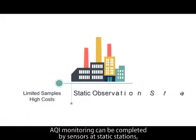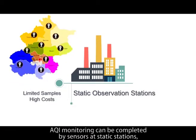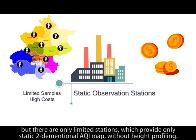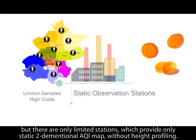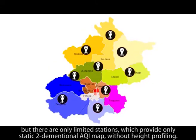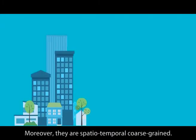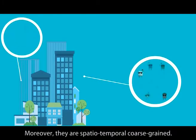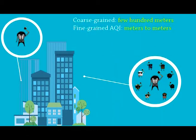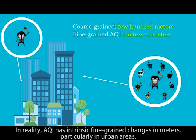AQI monitoring can be completed by sensors at static stations, but there are only limited stations which provide only a static two-dimensional AQI map without height profiling. Moreover, these are spatially and temporally coarse-grained. In reality, AQI has intrinsic fine-grained changes in meters, particularly in urban areas.